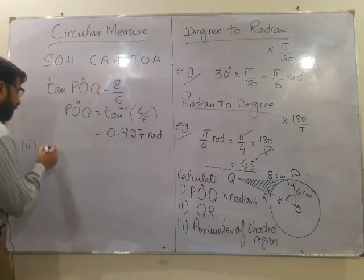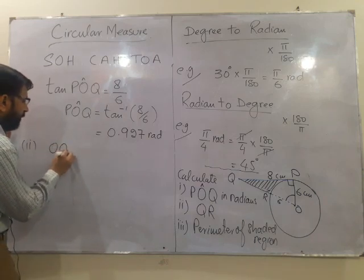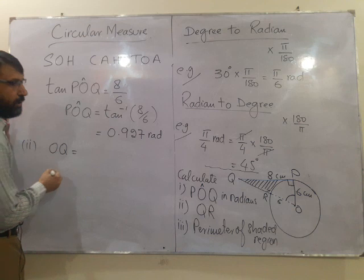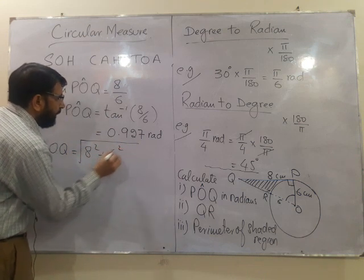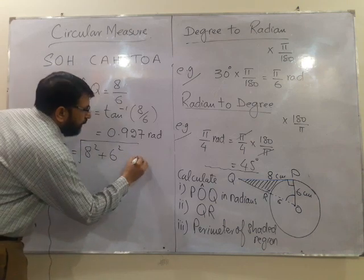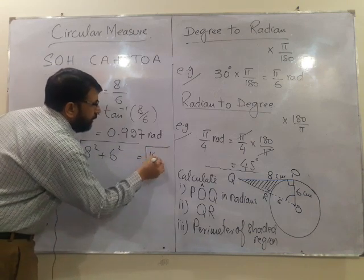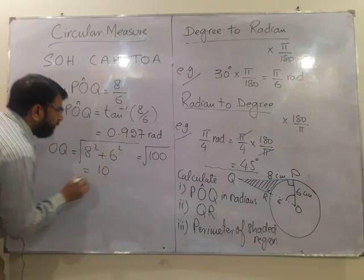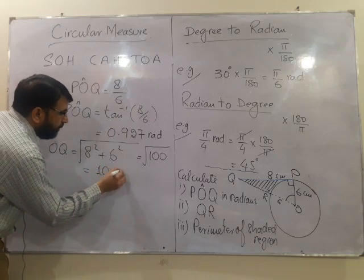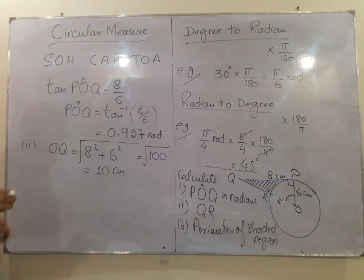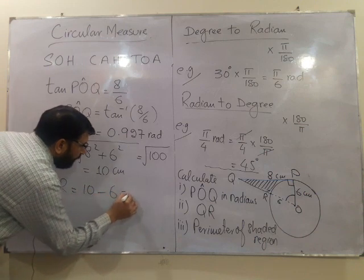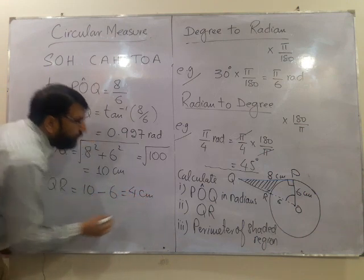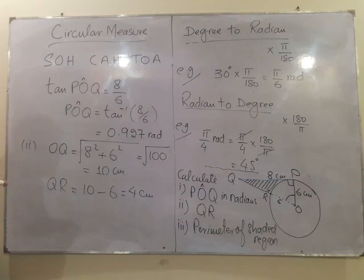So by using the Pythagoras theorem, OQ is equals to 8 squared plus 6 squared which makes it equals to square root 100. And obviously it is going to be 10 cm. Now to find out the length of QR, 10 minus the radius which is going to give us that QR is actually 4 centimeters.